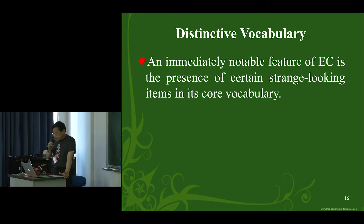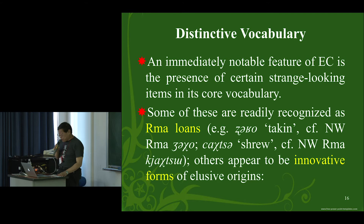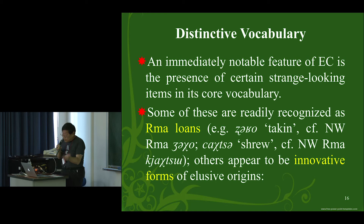An immediately notable feature of EC is the presence of certain strange-looking items in its core vocabulary. Some of these are readily recognized as Erma loanwords. For example, the word for Takin — a bovid animal — is 'Rho' in this Tibetan language, which is obviously a loanword from Northwestern Chiang/Erma, whose word is 'Zhe-Ho' — very similar in pronunciation. But others appear to be innovative forms or substratal forms of elusive origins.